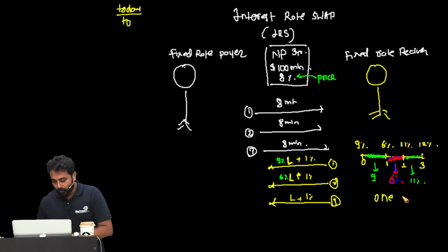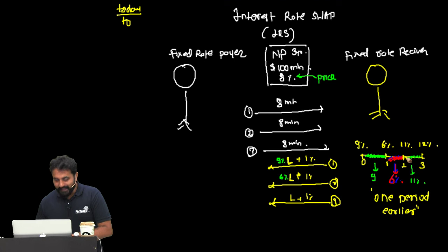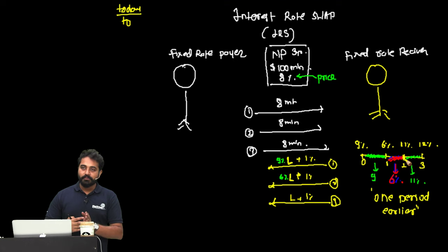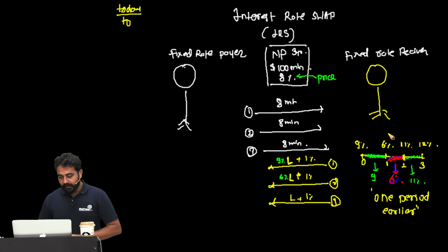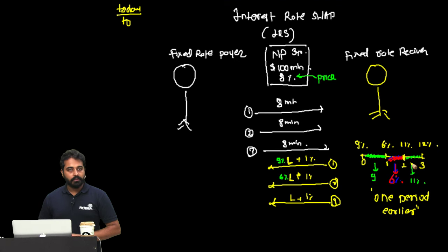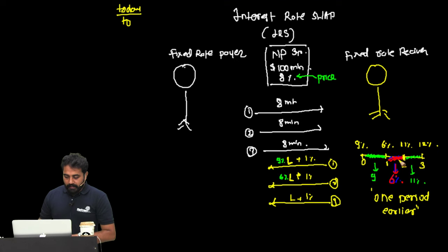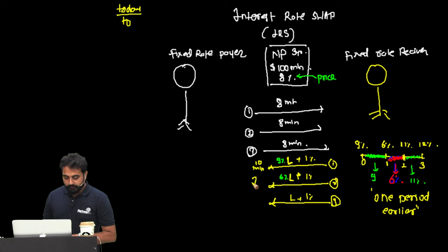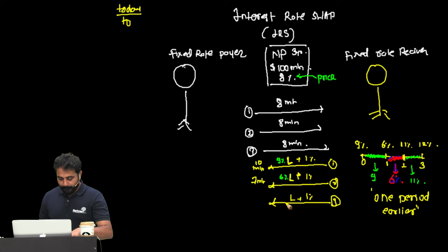So now let's calculate the numbers. Year 1: LIBOR 9% plus 1% spread = 10 million received. Year 2: LIBOR 6% plus 1% = 7 million received. Year 3: the last applicable rate is 11% plus 1% = 12 million received. So the fixed rate payer pays 8 million each year and receives 10, 7, and 12 million in years 1, 2, and 3 respectively.